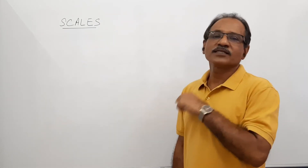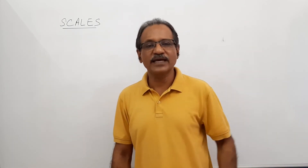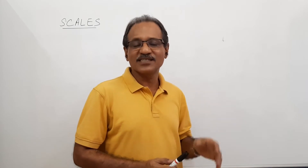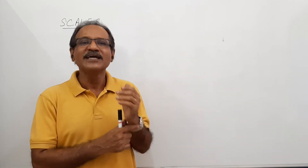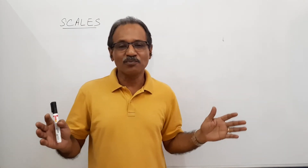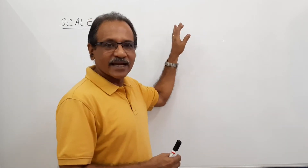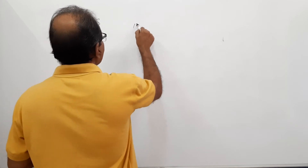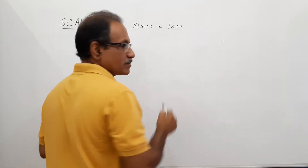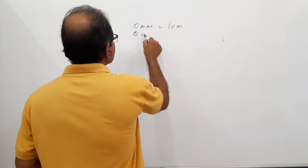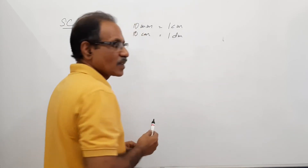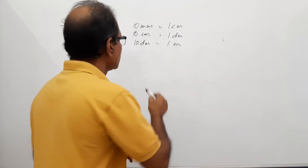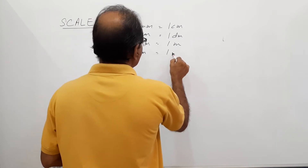Before drawing the scales — plain scale, diagonal scale, vernier scale, comparative scale — there is certain basic information I would like to convey. One is the relationship between distances. You have studied them in school but there is a high probability you don't remember them. Please note: 10 millimetres equals 1 cm; 10 centimeters equals 1 decimeter; 10 decimeters equals 1 meter; 10 meters equals 1 decameter.